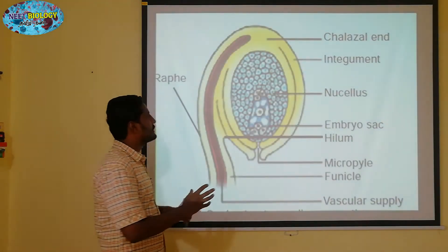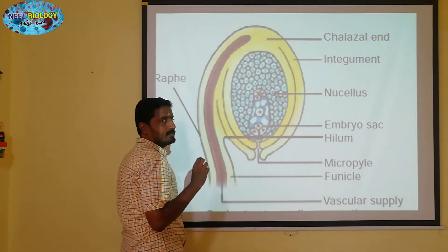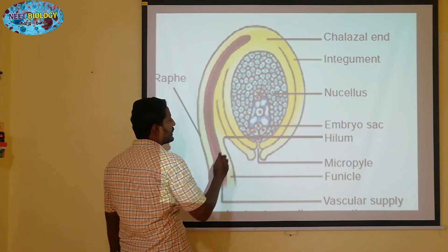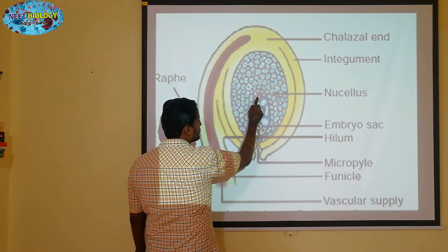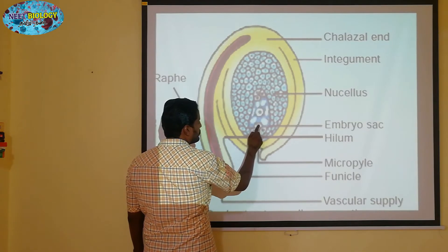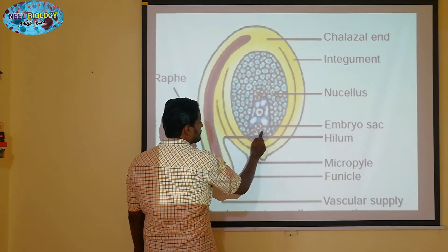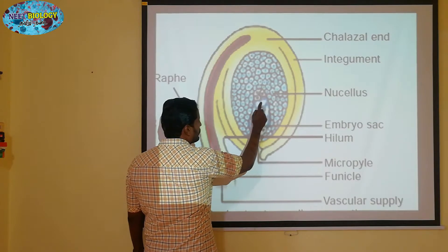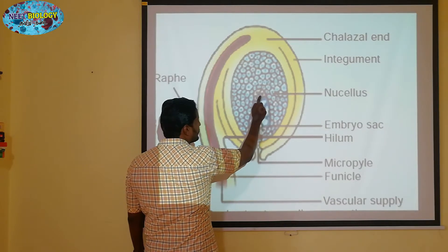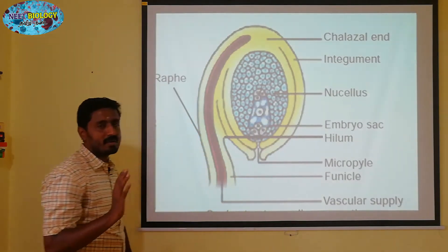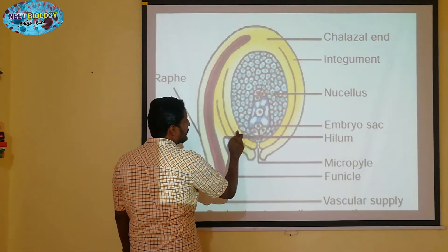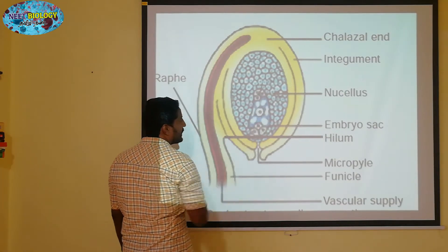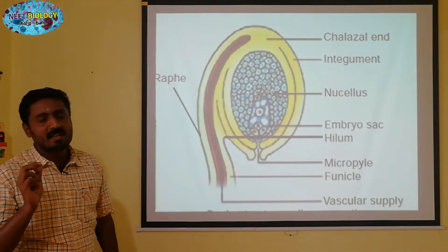First of all, there is an embryo sac. There are synergids, secondary nuclei, and antipodals. There are two male gametes and two embryos.